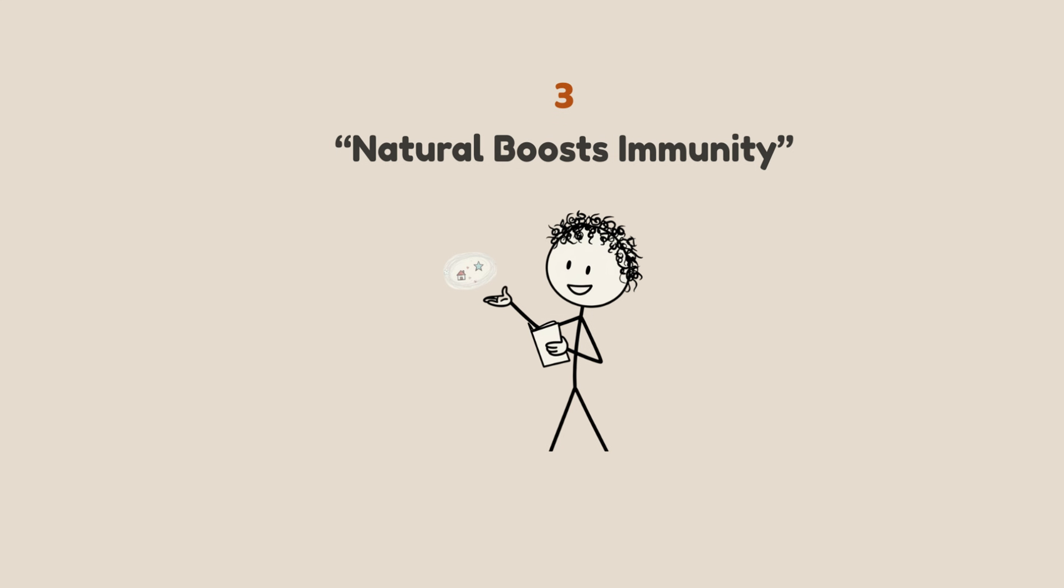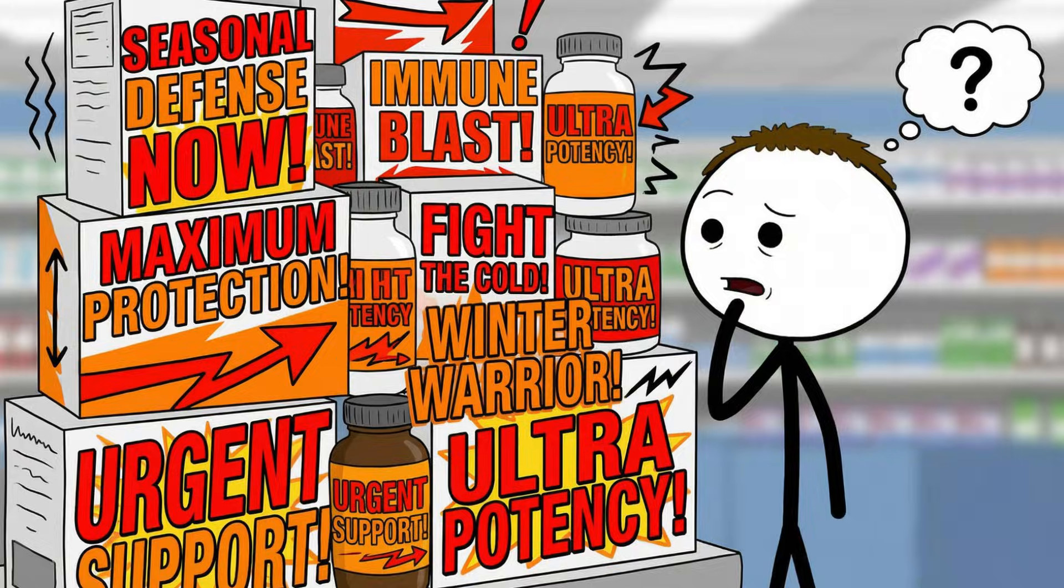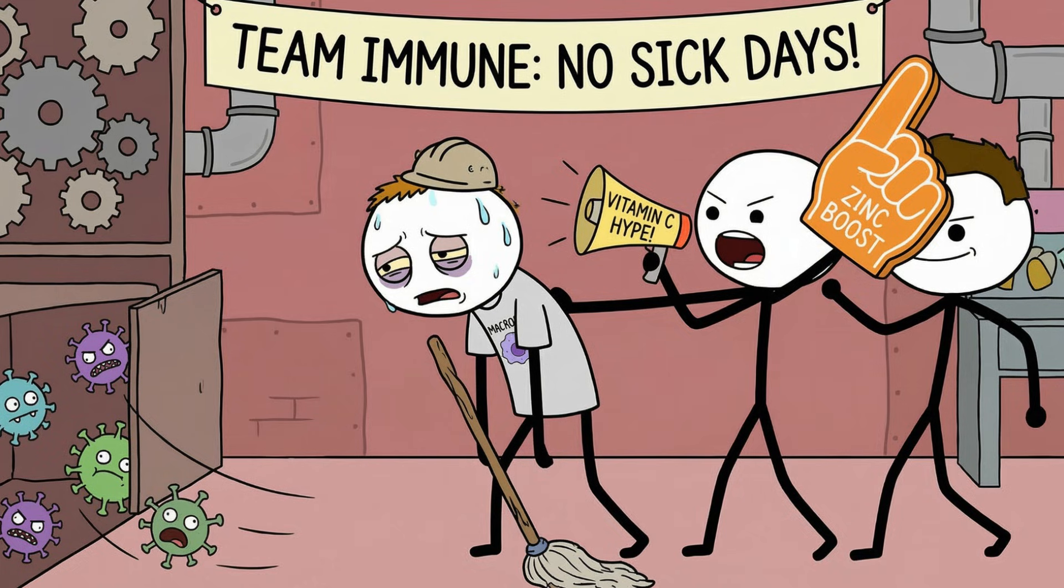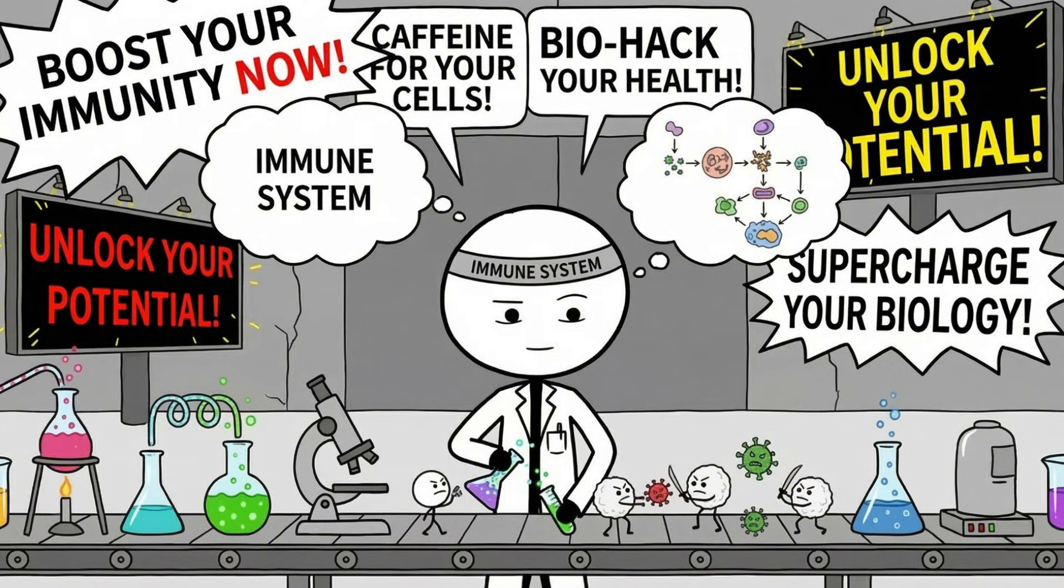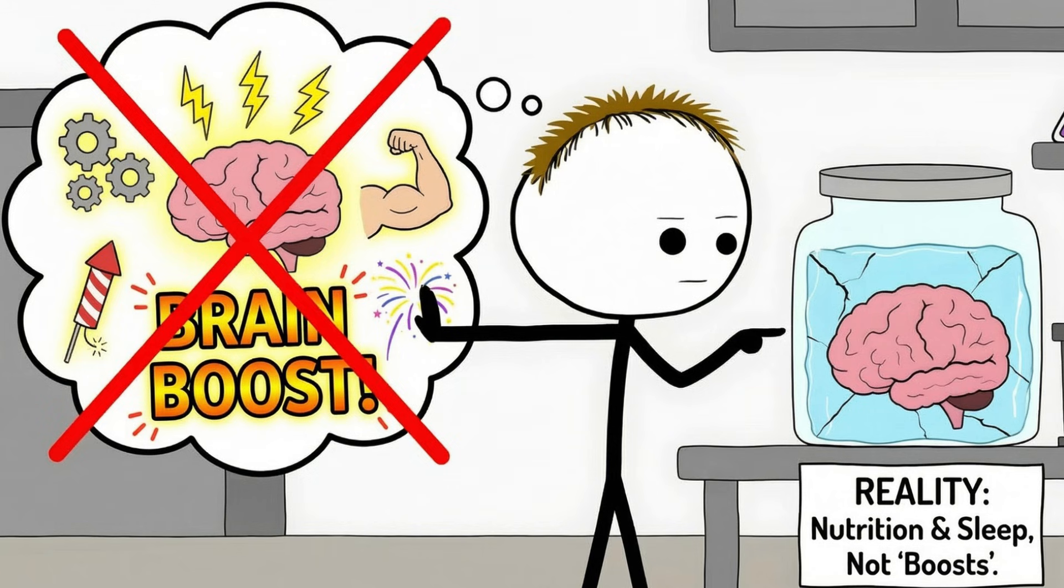Number three, natural boosts immunity. Every cold season, labels get louder: immune defense, shield, armor, boost. The language makes your immune system sound like a sleepy employee who just needs a strong coffee and a motivational speech. That's not how immunity works.